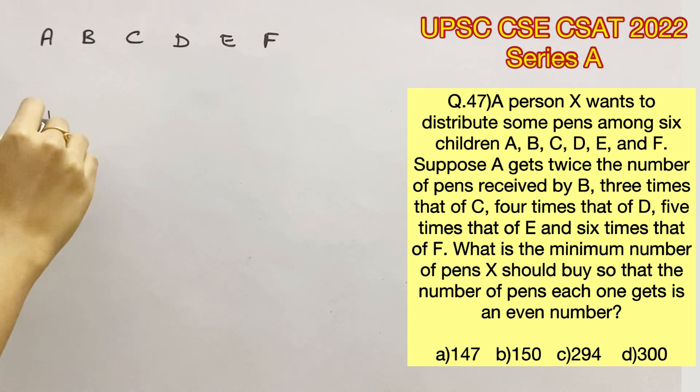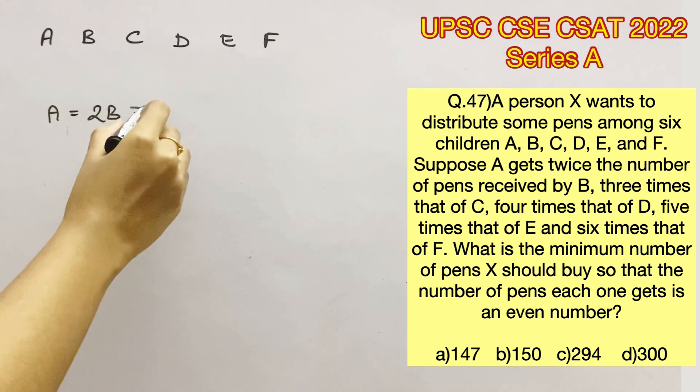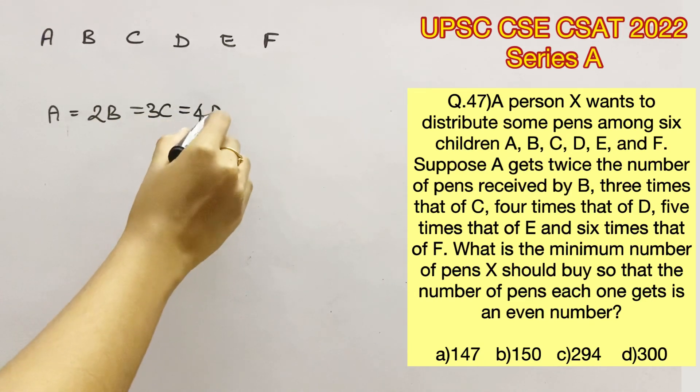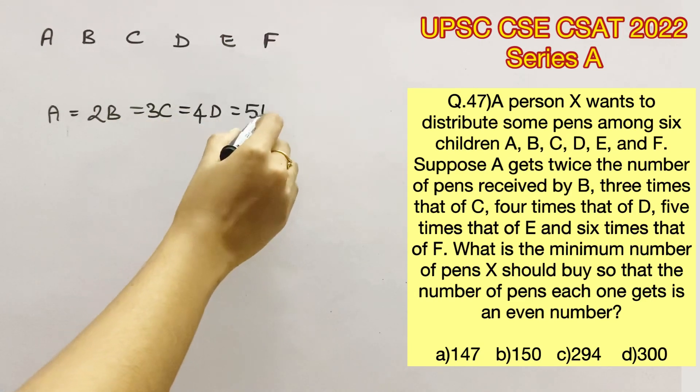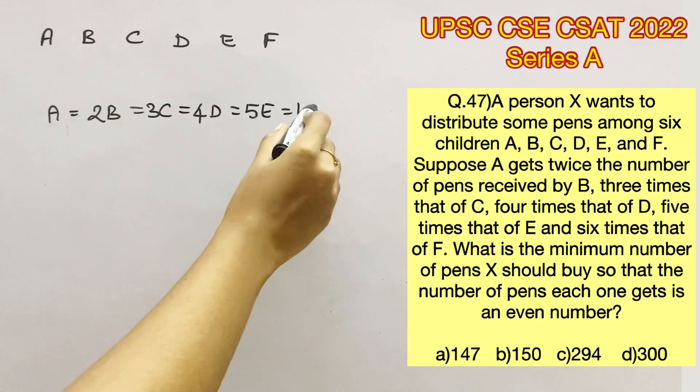They have given that A gets twice the number of pens received by B. So we can write it as A is equal to 2B, which is also equal to 3 times that of C, 4 times that of D, 5 times that of E and 6 times that of F. Let's frame the equation as such.